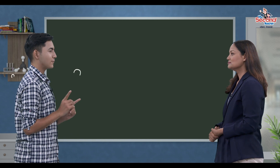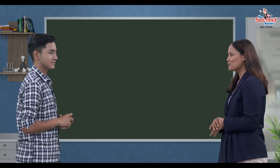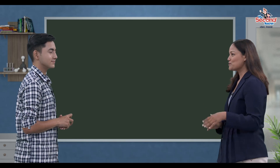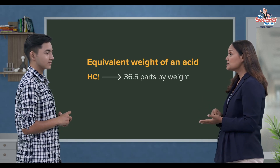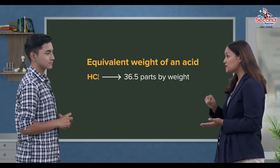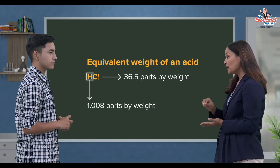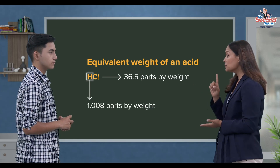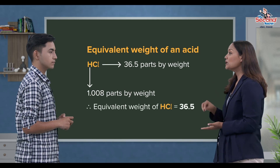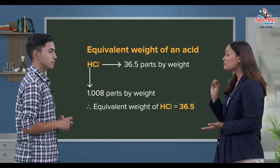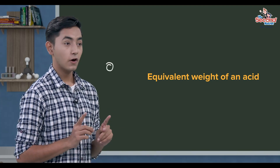Ali buzna gara baigo. Ma example saith buzaun su, ani buzi aal sauni. HCl ko 36.5 parts by weight mei 1.008 parts by weight replacable hydrogen chao. Theisaile, HCl ko equivalent weight 36.5 uncha.